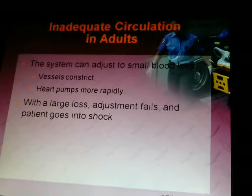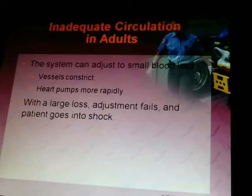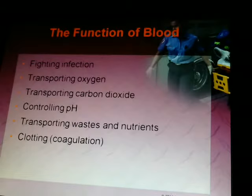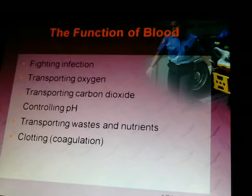With inadequate circulation, the system can adjust to small blood losses, but not well to large ones. Vessels constrict and the heart pumps more, but with a large loss, adjustment fails and the patient goes into shock — inadequate tissue perfusion. The functions of blood include fighting infections, transporting oxygen and carbon dioxide, controlling pH, transporting waste and nutrients, and clotting, also known as coagulation.